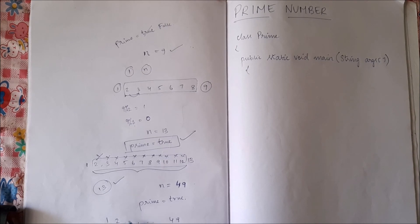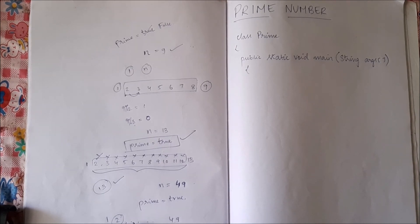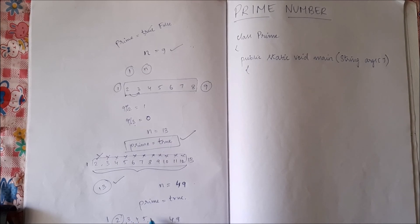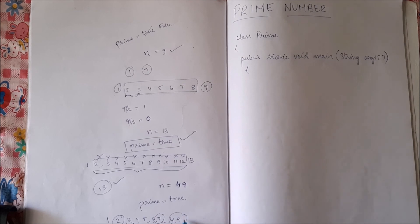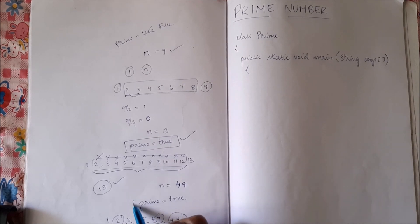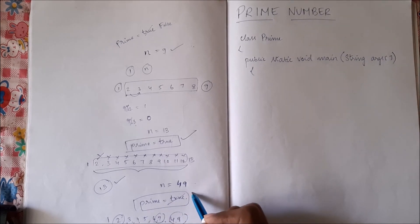We will check if 2 divides 49? No. Then we will check for 3, 4, 5, 6, then 7. 7 will divide 49. So our assumption here is wrong. So we will change it to false.